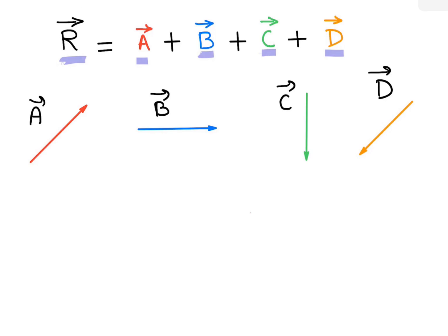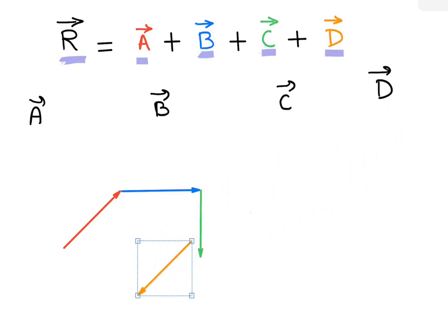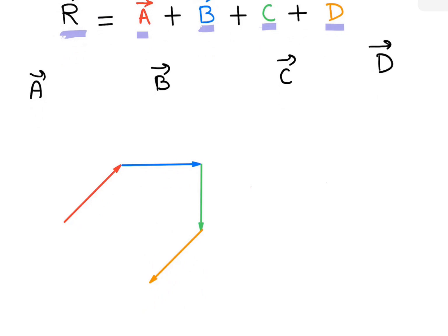Now we want to add the four vectors. First we take vector a, then vector b is connected at the head of vector a — the tail of vector b is on the head of vector a. Then the tail of vector c is connected to the head of vector b, and then vector d. The resultant vector r starts from the tail of vector a and ends at the head of vector d.